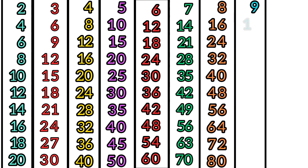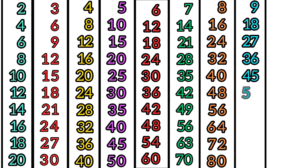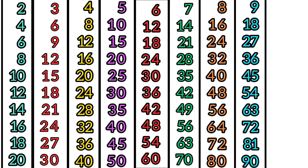9 times tables. 9 times 1 is 9. 9 times 2 is 18. 9 times 3 is 27. 9 times 4 is 36. 9 times 5 is 45. 9 times 6 is 54. 9 times 7 is 63. 9 times 8 is 72. 9 times 9 is 81. 9 times 10 is 90.